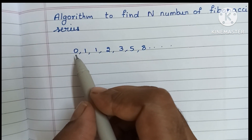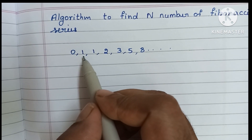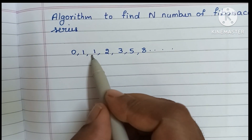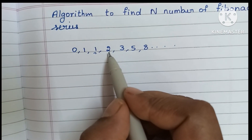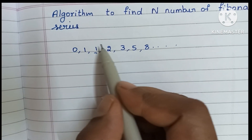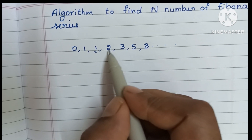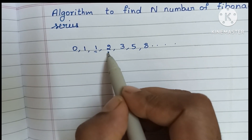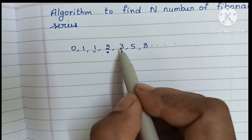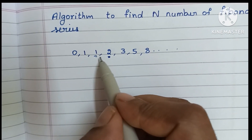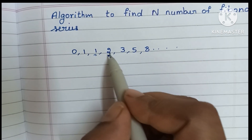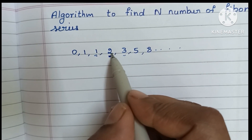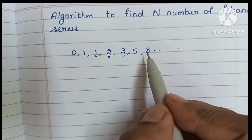The first two initial numbers are 0 and 1. The third number is found by adding the first two: 0 plus 1 equals 1. The next number is found by adding the two numbers before it — 1 plus 1 equals 2, then 1 plus 2 equals 3, and 2 plus 3 equals 5. This is the format to find the Fibonacci series.